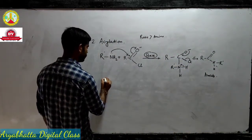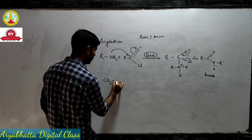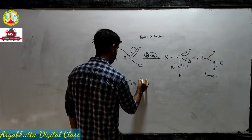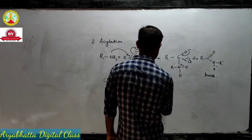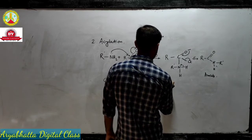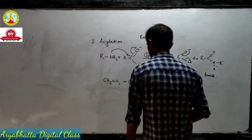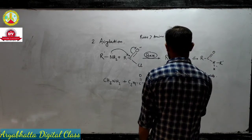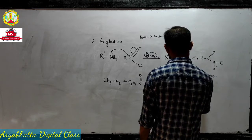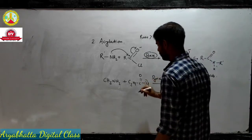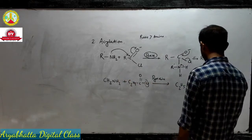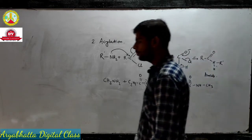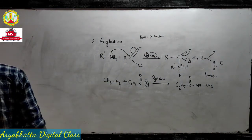For example, if we have methanamine and we have pyridine — pyridine is a stronger base than the amine — we remove this chlorine and remove one hydrogen from here. That's the product.